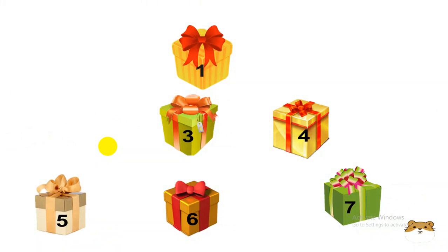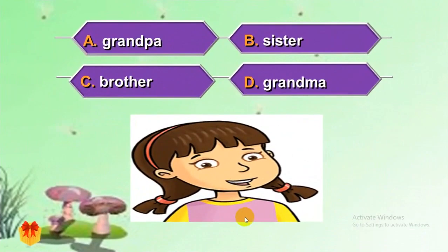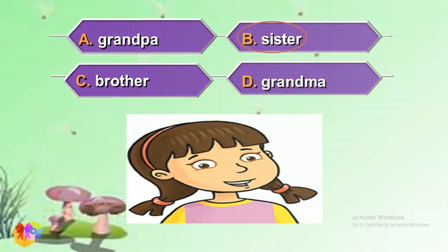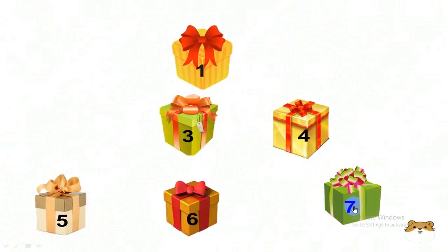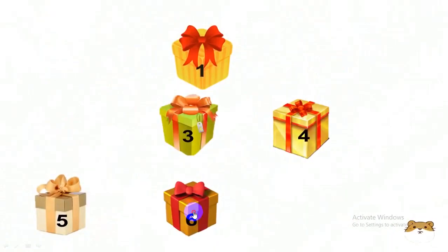Next. Present 7. Okay, you look at the picture and choose: A. Grandpa, B. Sister, C. Brother, D. Grandma. Your answer? B. Sister. Well done, clap your hands. Next, present 6: A. Mom, B. Sister, C. Brother, D. Dad. Your answer? C. Brother. Well done. Present 4 — very lucky. C. Brother. Well done.